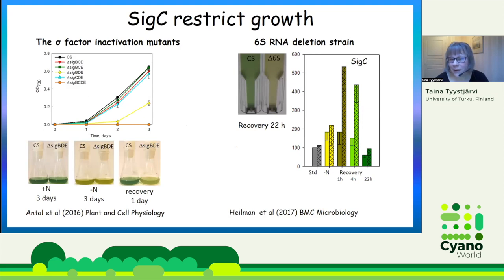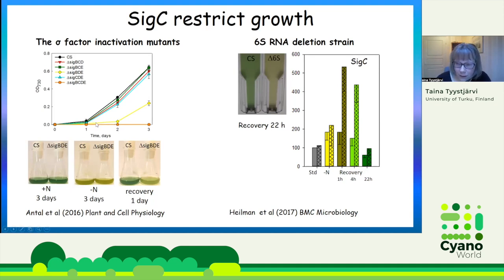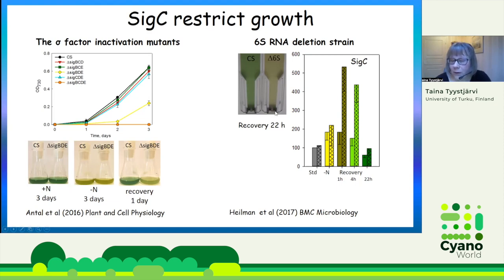We have previously shown that SigC is a growth-restricting sigma factor. If we force Synechocystis cells into stationary phase by removing nitrogen from the growth medium, cells that have SigC as their only remaining group 2 sigma factor do not recover efficiently from that nitrogen deficiency after nitrogen is added back — they do recover, but more slowly. The control strain completely recovers after the first day, whereas Delta-SigC cells have not. The same is seen with a 6S small regulatory RNA deletion strain — it also recovers slowly from nitrogen depletion and has a lot of SigC in the RNA polymerase holoenzyme during the initial recovery period.